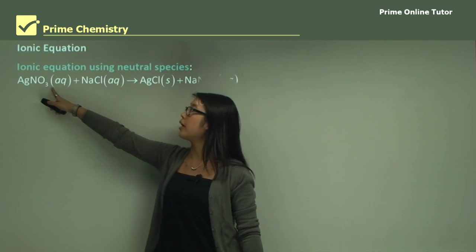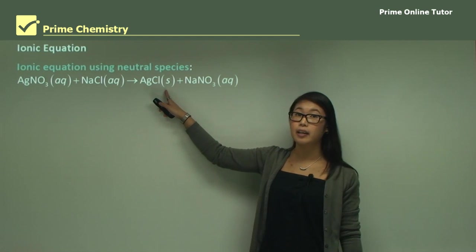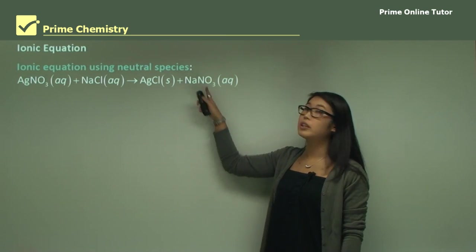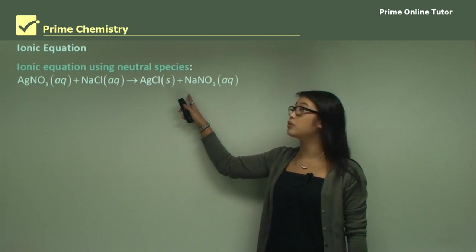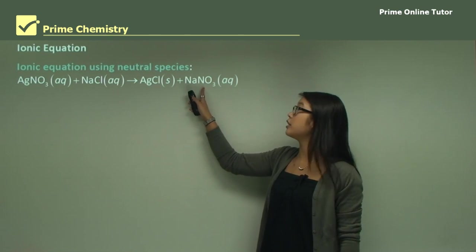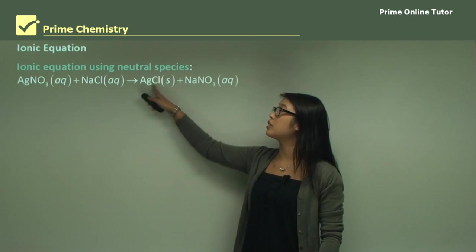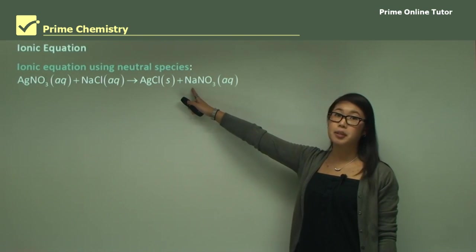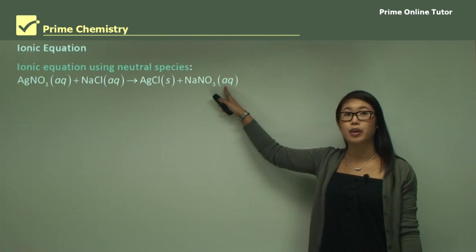In this case, we have aqueous solution mixed with aqueous solution to form the precipitate — the solid denoted by S — with the remainder in aqueous solution. In the water, sodium is separate from NO3, so they are separate ions — positive charge here, negative charge there. Because water is separating them in solution, we write a little AQ to indicate that.